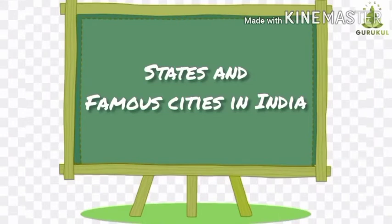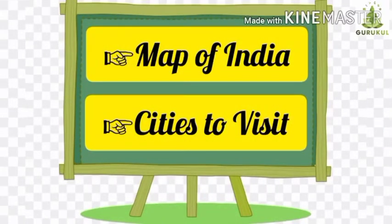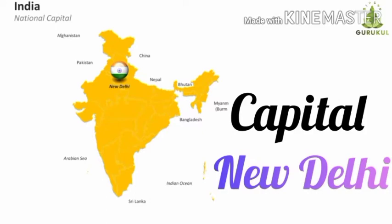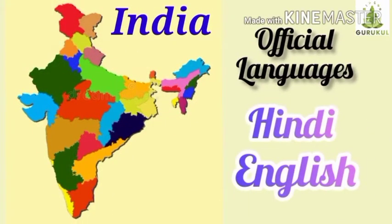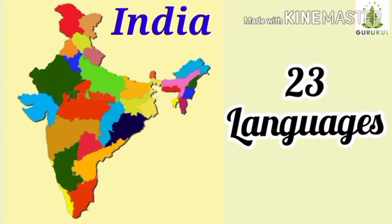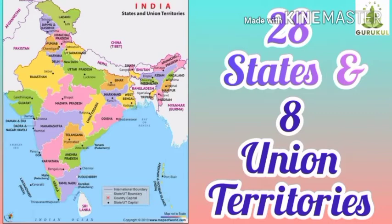Today we will increase our GK knowledge more by learning the states and famous cities in India. We will see it from two lessons: map of India and cities to visit. India is a democratic republic country and New Delhi is its capital. India's official languages are Hindi and English, and India is recognized by 23 languages that people speak in various states.